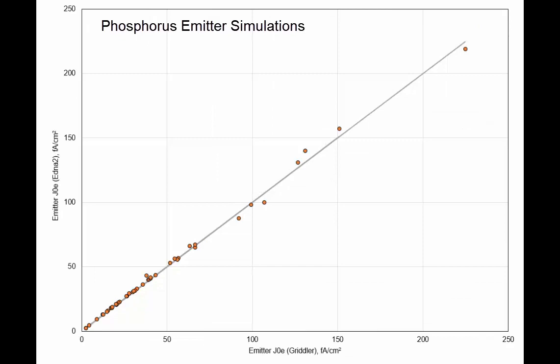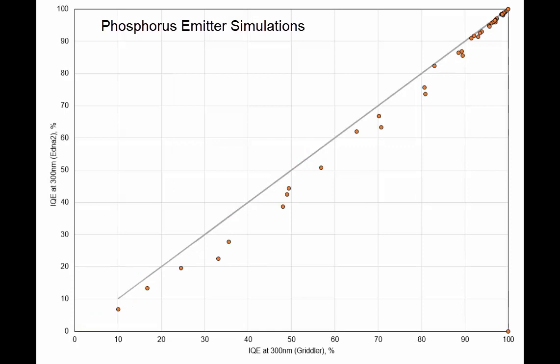This is a comparison of the emitter J0Es, the saturation current density that are calculated. So again here, the agreement is good, and the average fractional deviation is a little less than three percent.